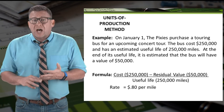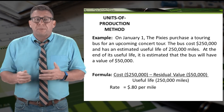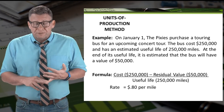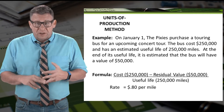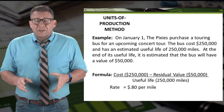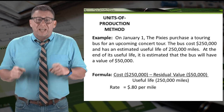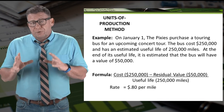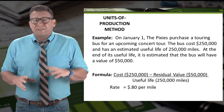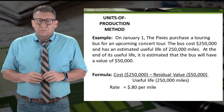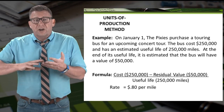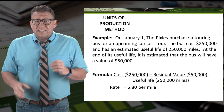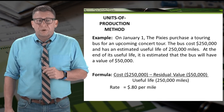The formula is cost minus residual value divided by useful life in terms of units. So $250,000 minus $50,000 equals $200,000, then divide that by 250,000 miles, and we get a depreciation rate of $0.80 per mile. What this tells us is for every mile the bus is driven, $0.80 of depreciation expense will be recorded.